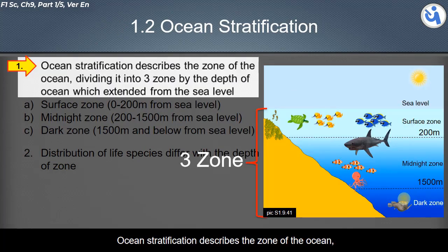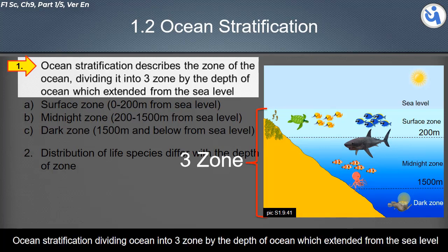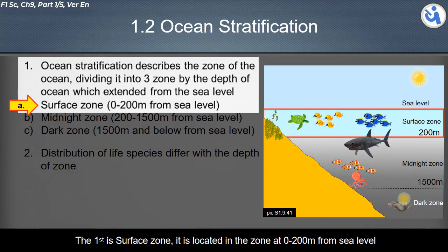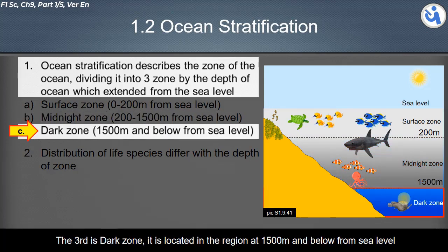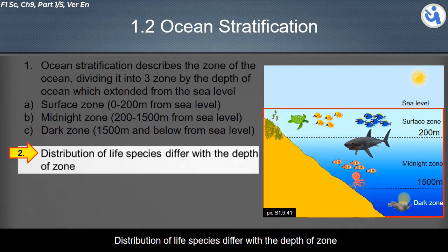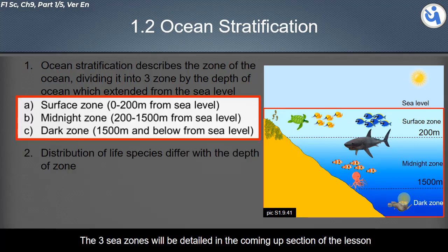The following content covers ocean stratification. Ocean stratification divides the ocean into three zones by depth from sea level: the surface zone (0 to 200 meters), the midnight zone (200 to 1,500 meters), and the dark zone (1,500 meters and below). The distribution of life species differs with the depth of each zone. These three zones will be detailed in the upcoming section.